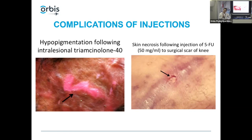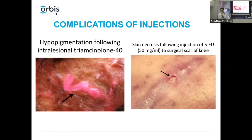There are different injection techniques. Some inject small micro-boluses. For a linear hypertrophic scar you can inject retrograde — insert the needle, then inject as you withdraw, using the needle track to deliver medication through tight tissue. The same retrograde technique is used when injecting fillers for aesthetic purposes. The goal is to deliver medication throughout the entire volume of the scar — if it's three to four millimeters thick, inject at the base as well as midway through.